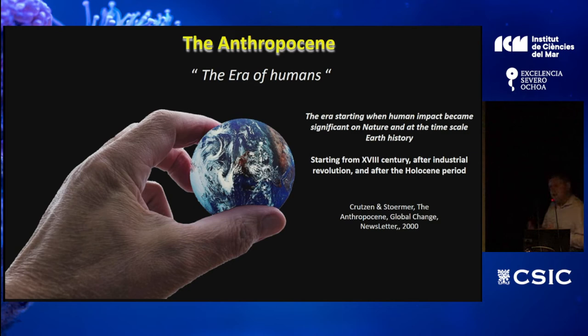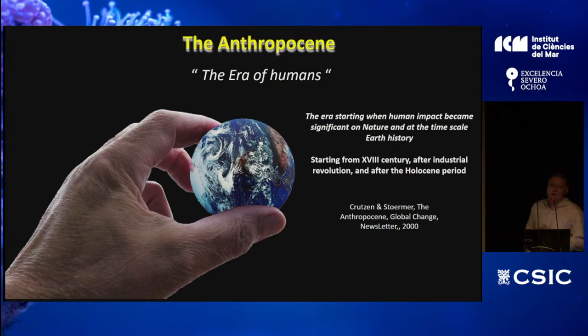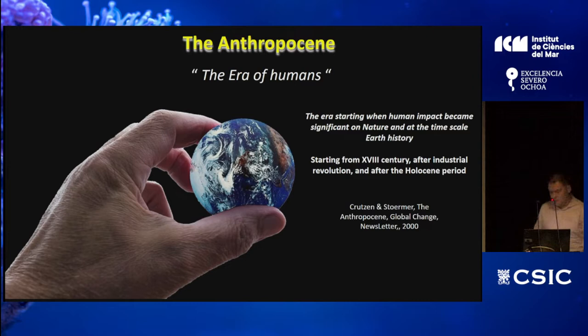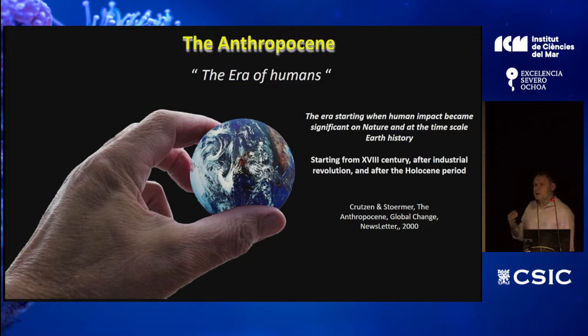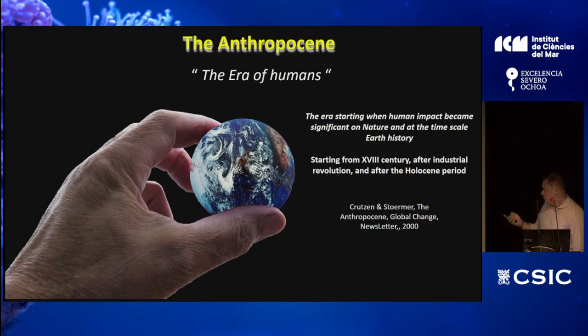This brings me to the impact of humans on coastal ecosystems. We heard a little about the Anthropocene — one of the periods I focus on when I work on paleoecology. The Anthropocene is the period, though controversial, where human activity started having a significant impact on nature at the timescale of Earth's history. From the 17th and 18th century, after the Industrial Revolution, this impact has been significant — and this is what we call the Anthropocene period.